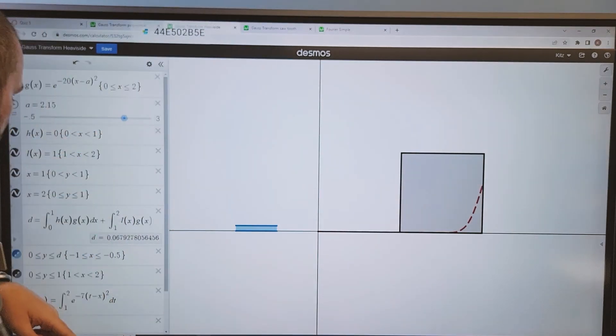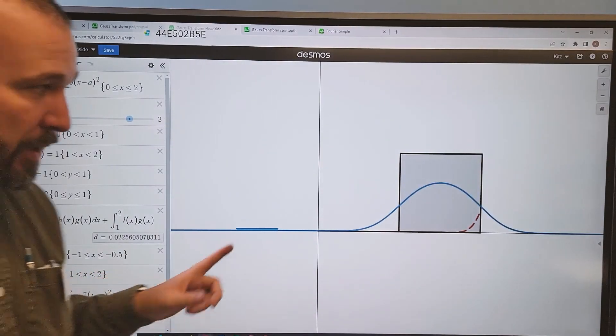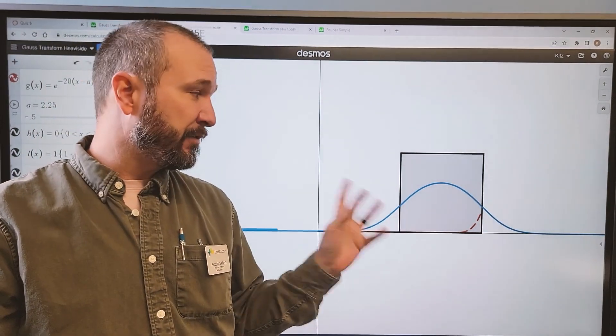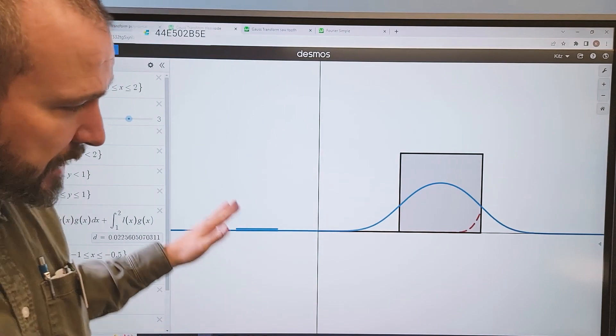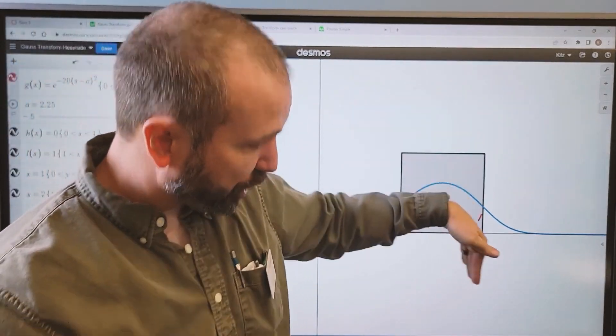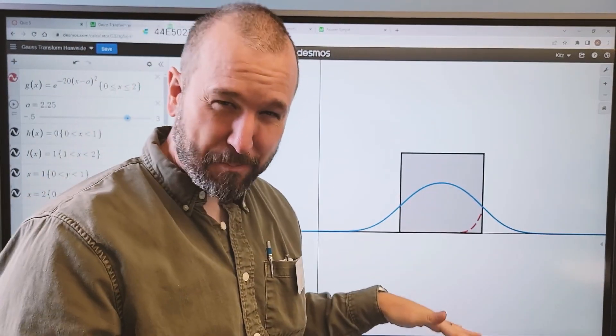So this curve right here is the Weierstrass transform or the Gauss transform of this function. You can see the original function had a bunch of very sharp corners in it. It was a really square bump there.